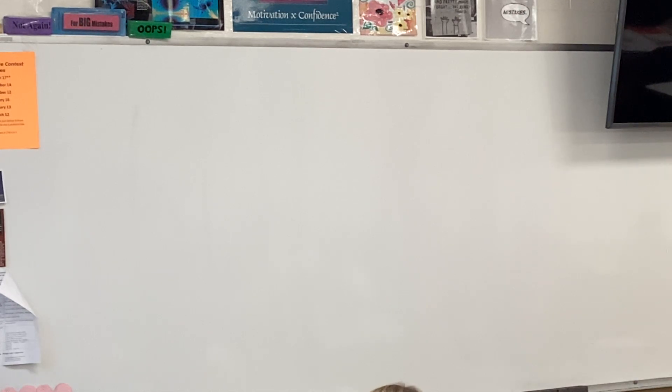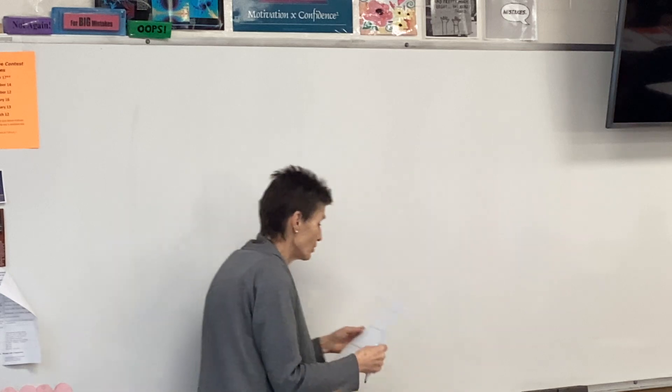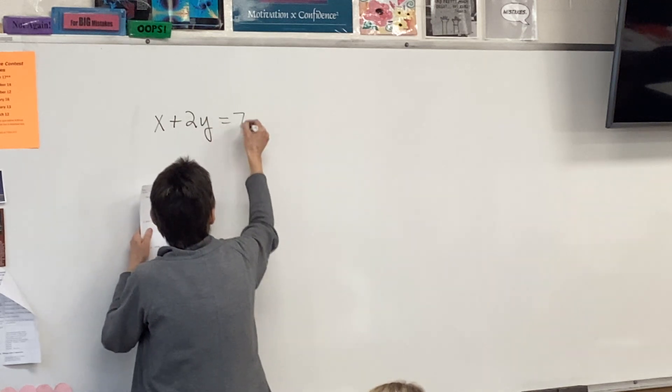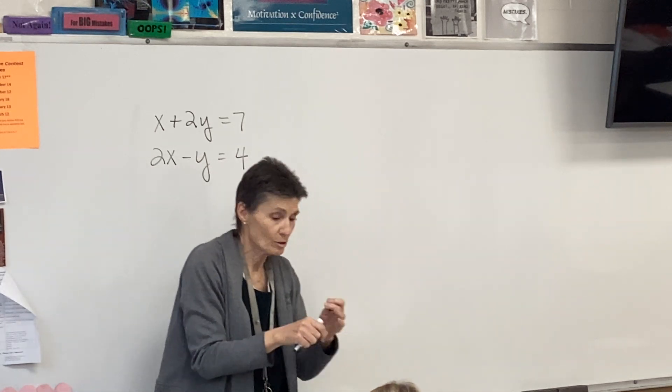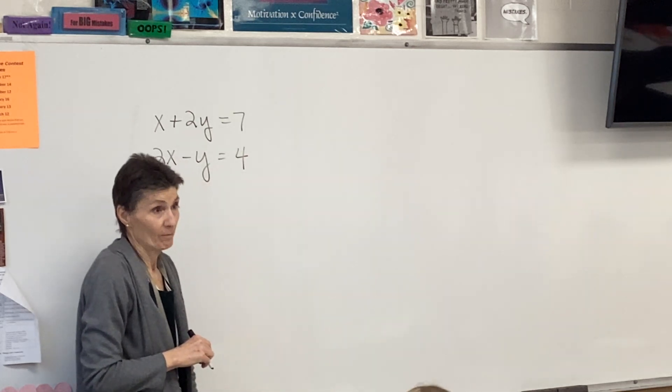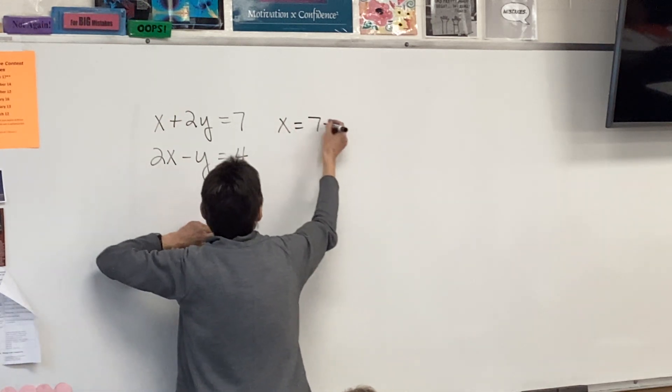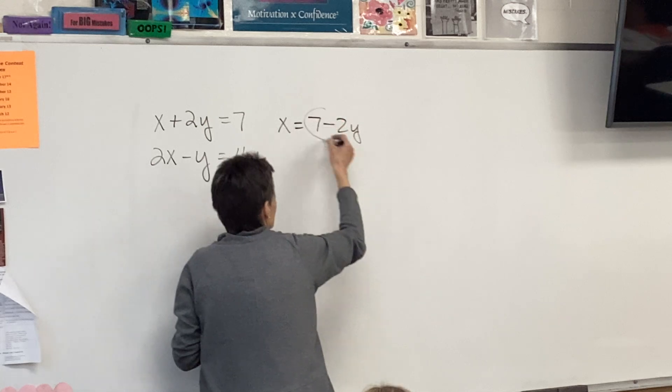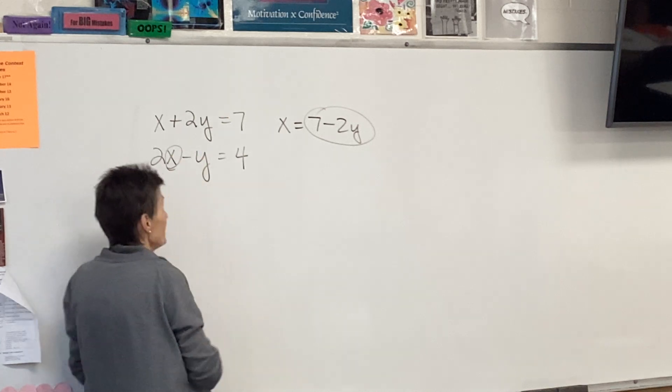Okay, all right, so here we go. Number one says solve using substitution. Now this is exactly what your test is going to look like, so you need to make sure that you are following the directions. What does substitution mean? I get something by itself, right? And it would be easiest to get this by itself, so I'm going to write x equals 7 minus 2y. Then I'm going to take the 7 minus 2y and plug it in right here. That's my x.